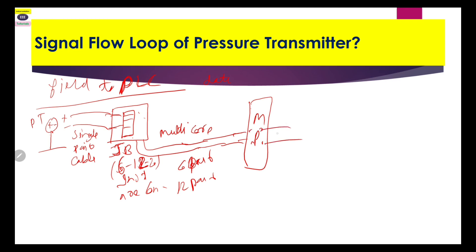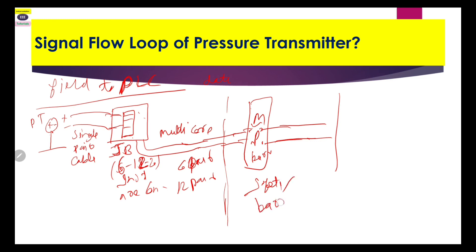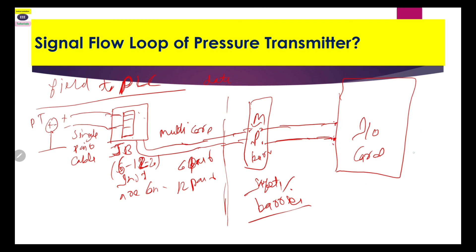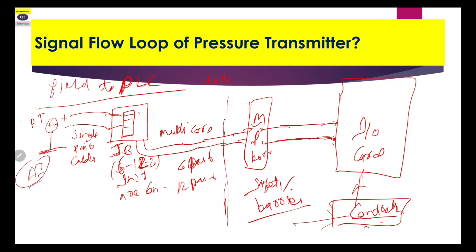At the marshalling panel, some terminal arrangement is there, and then it goes to the PLC I/O card. If there is a hazardous area present in your oil and gas sector, safety barriers are also used. The I/O card has two wires connected, and then the I/O card communicates through your controller. The programmer writes your controller logic where this analog input (AI) signal can be used for interlocks or some other purpose.